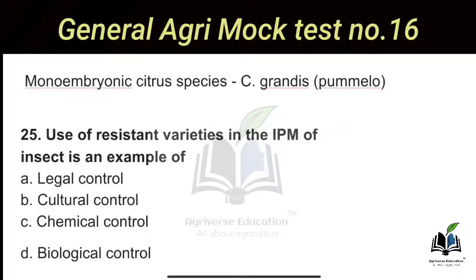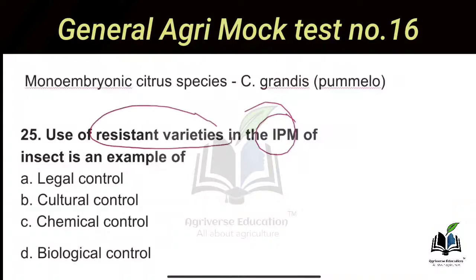The last question: Use of resistant variety in the IPM of insects is an example of which type of control — biological, chemical, cultural, or legal? Here we are using a resistant variety, so this is called cultural control. Use of resistant variety in IPM is an example of cultural control.